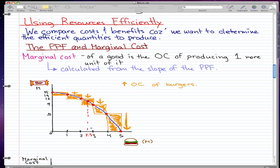As we recap, as we move along the PPF, the opportunity cost of burgers increase, and the opportunity cost of producing one more burger is the marginal cost of the burger.